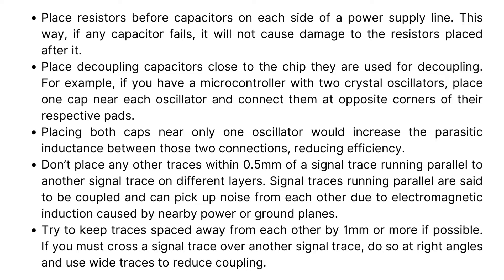Don't place any other traces within 0.5 mm of a signal trace running parallel to another signal trace on different layers. Signal traces running parallel are said to be coupled and can pick up noise from each other due to electromagnetic induction caused by nearby power or ground planes. Try to keep traces spaced away from each other by one millimeter or more if possible. If you must cross a signal trace over another signal trace, do so at right angles and use wide traces to reduce coupling.